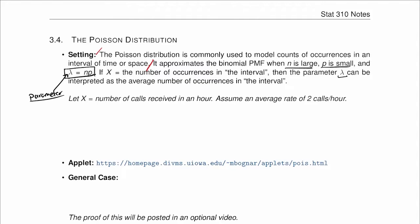Let x, for example, be the number of calls received in an hour. Assume an average rate of 2 calls per hour. So if we have this, we know that x is going to be a Poisson distribution with lambda equal to 2.